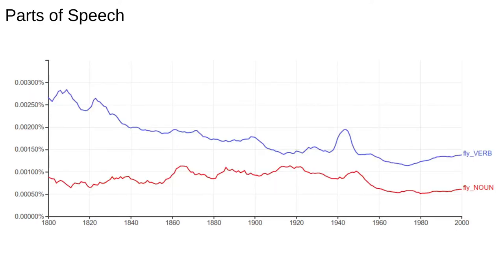We can also use the Ngram viewer to search for parts of speech — for example to differentiate words that can be both nouns and verbs, like 'fly'. We see that the verb 'fly' as in 'fly a plane' is more common than the noun 'fly' as in the buzzing insect. Text analysis generally requires you to have a fairly good knowledge of the vocabulary, grammar, and syntax of the language you're studying.